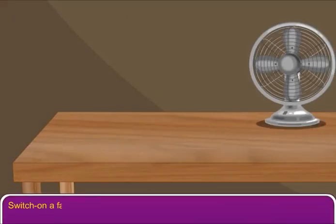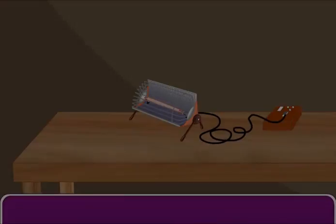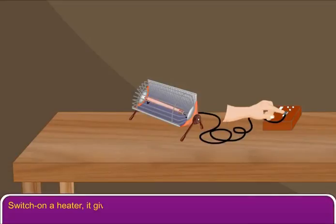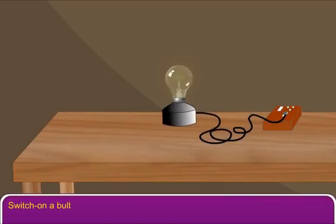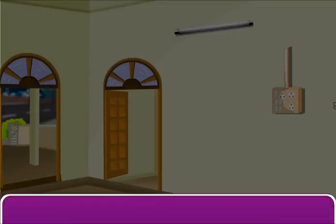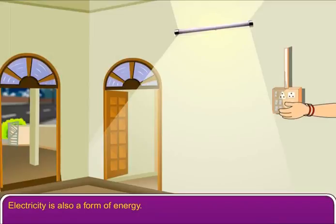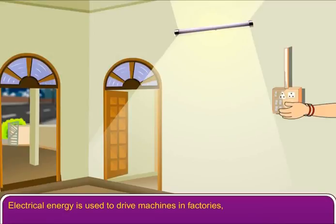Switch on a fan — it starts moving. Switch on a heater — it gives us heat. Switch on a bulb — it gives us light. Electricity is also a form of energy. Electrical energy is used to drive machines in factories, in grinding machines, and in tube wells, etc.